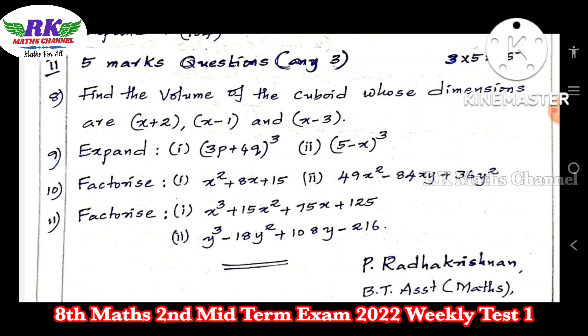49x² - 84xy + 36y². That's a question. We have to use identity because 49x² is 7² and 36y² is 6². So if you have a square number, you can use identity.